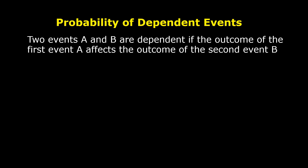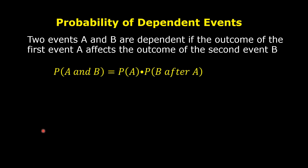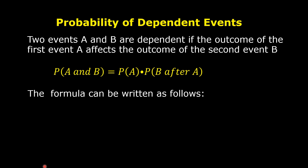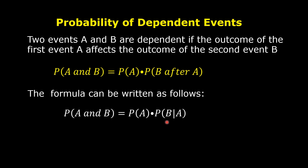Today's topic is Probability of Dependent Events. Two events A and B are dependent if the outcome of the first event A affects the outcome of the second event B. This is the formula for finding the probability of two dependent events A and B: the probability of A and B is equal to the probability of A times the probability of B given that A has occurred.